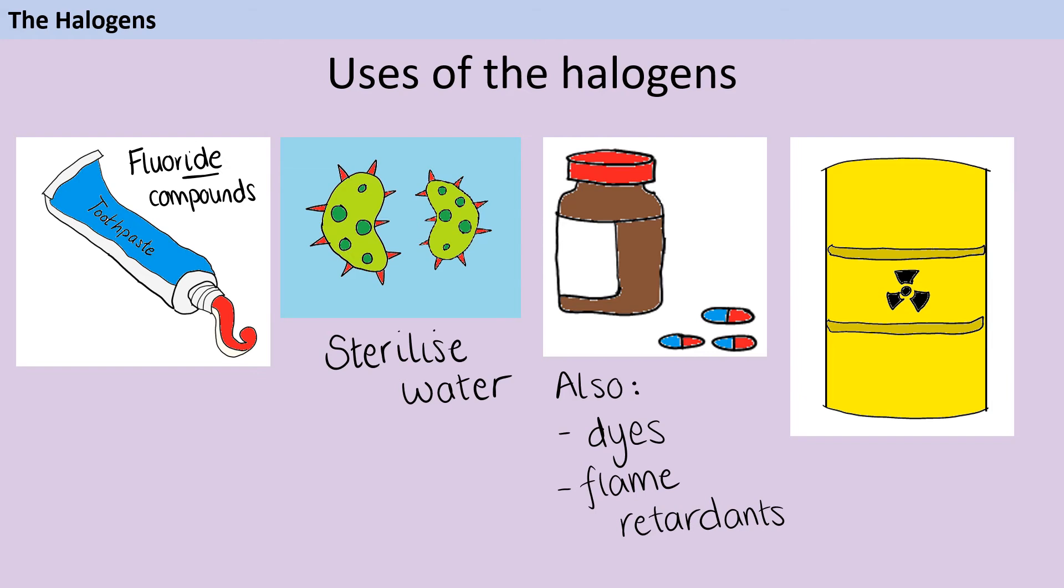Iodine can be used as a radioactive tracer in medicine. It can be injected into blood vessels in order to determine where there's a blockage.